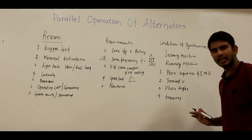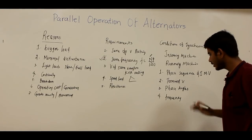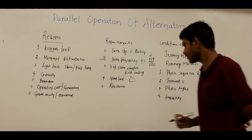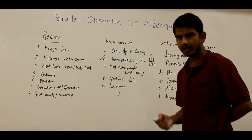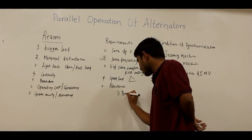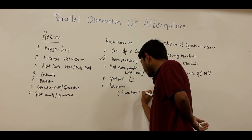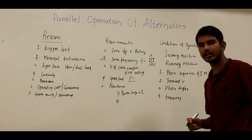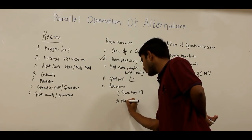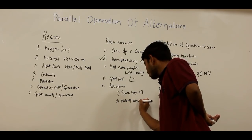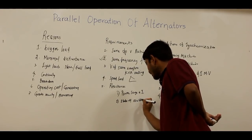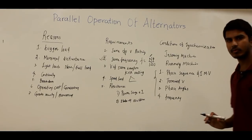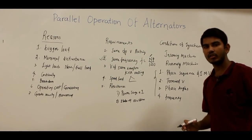If these four conditions are deviated or not satisfied, there will be two adverse effects. First, there will be high surges in power and current. Second, this results in the formation of electromechanical oscillation of the rotor, which may damage the equipment. Before synchronizing two alternators, we must check that all four conditions are satisfied, and then only the synchronizing switch is closed.